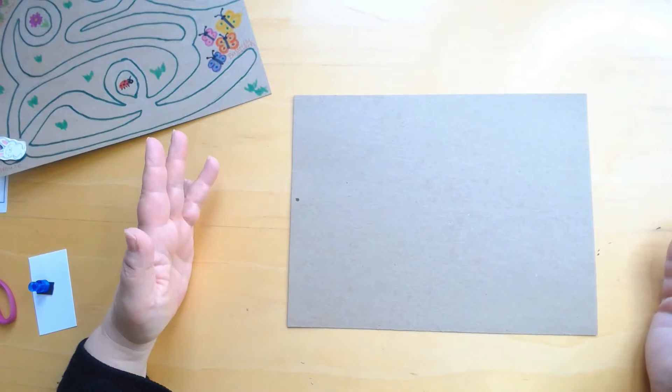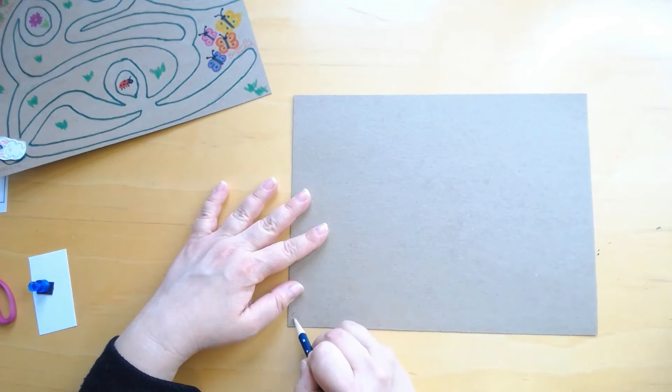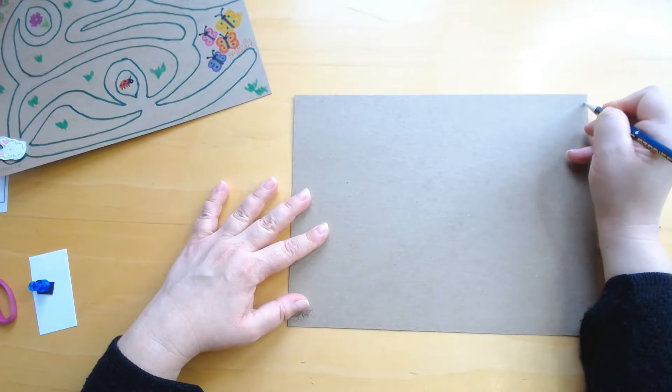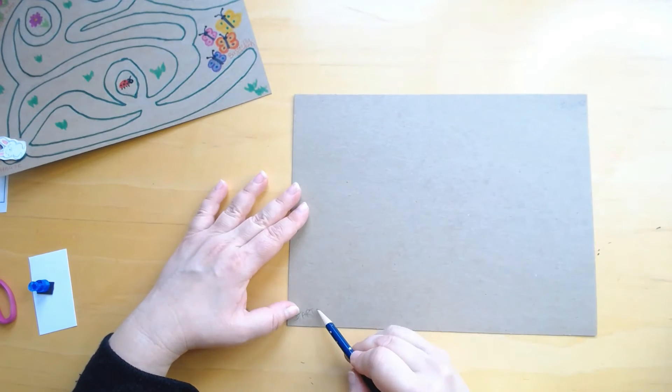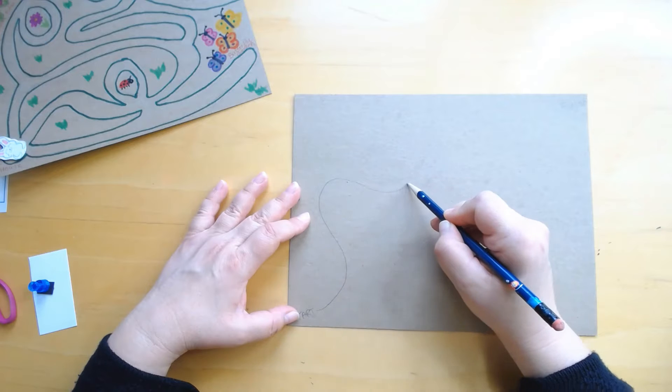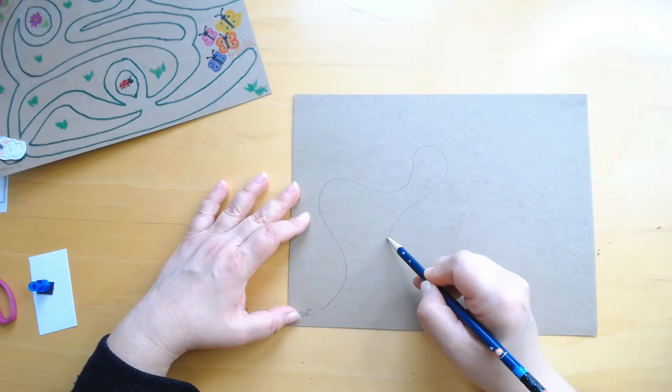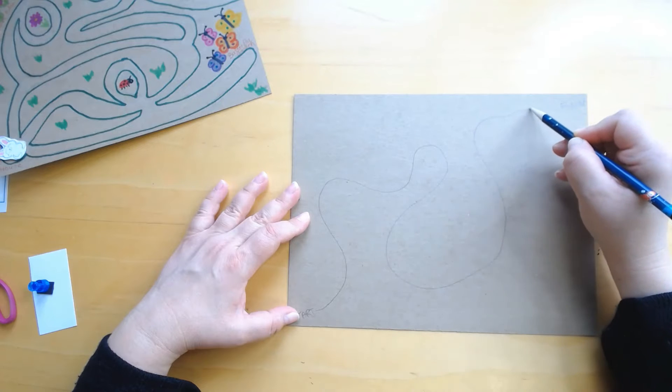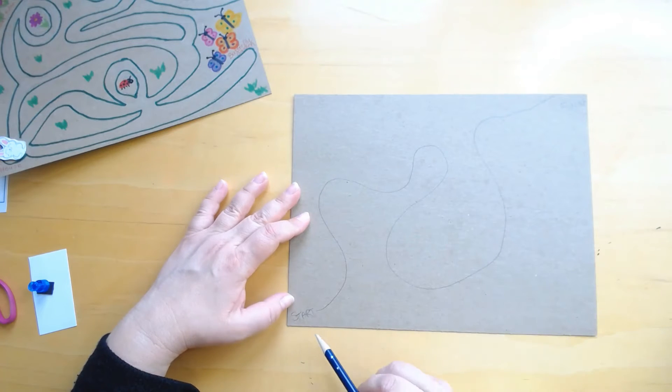So I just decided to start over here. This was my start and my finish is over here. And then I just made a line to start with and I did make some loops, but for this one I'm just gonna make a squiggly line.